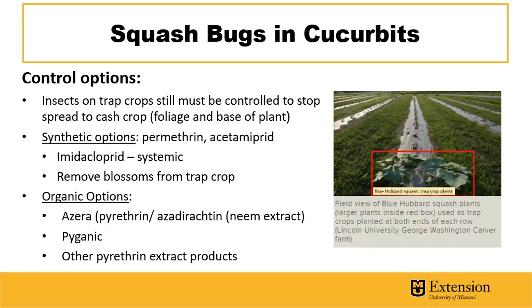For organic insecticide options, Azera is a combination of two tried-and-true organic options: pyrethrin, which is a chrysanthemum extract, and azadirachtin, which is a type of neem extract. Another brand name for just the pyrethrins is Pyganic. The floating row covers can be really effective if you want to avoid insecticides altogether — that's probably the best option. But the trap cropping system, especially on a small scale, can also be a great way to pull insects away from your cash crop and concentrate them on a more attractive trap crop.